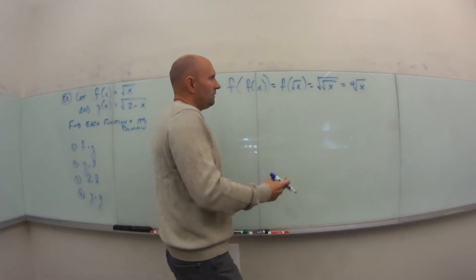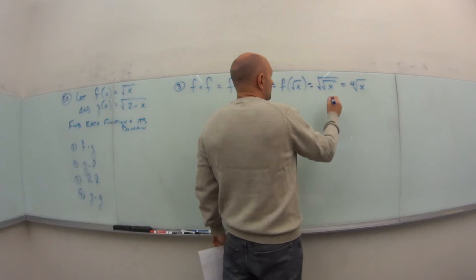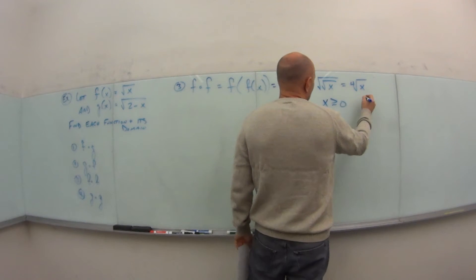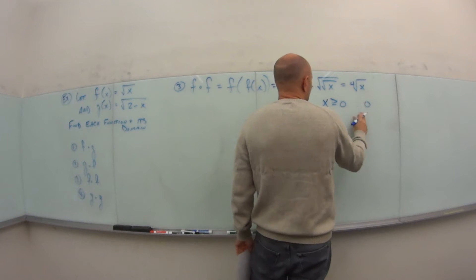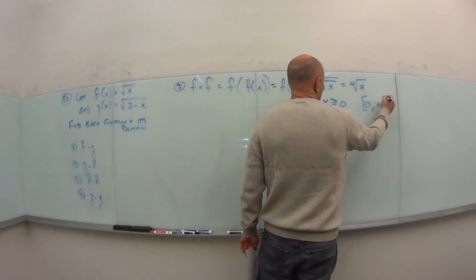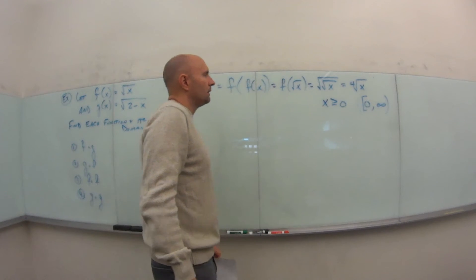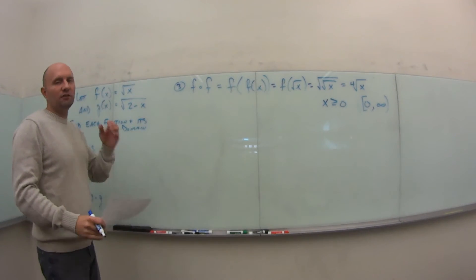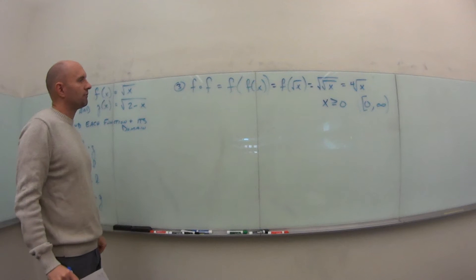For the domain of f∘f: since the fourth root is even, we still need x ≥ 0. In interval notation, the domain is [0, ∞).